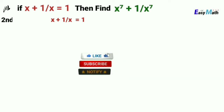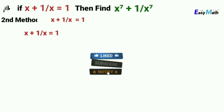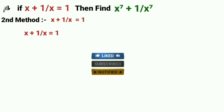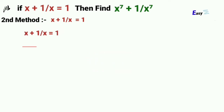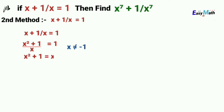Now for the second method, which is simple and easy to understand. Taking the denominator as common, we have x squared plus 1 over x equals 1, where x cannot equal minus 1. Multiplying x on both sides gives x squared plus 1 equals x, which can be rewritten as x squared plus 1 minus x equals 0.